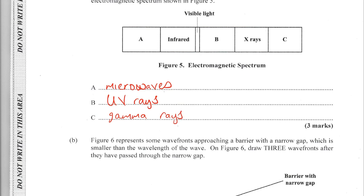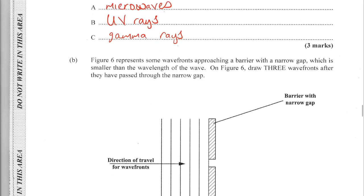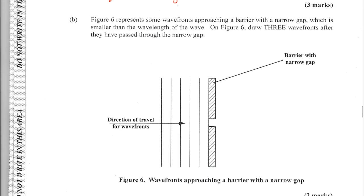Figure 6 represents waveforms approaching a barrier with a narrow gap, which is smaller than the wavelength of the wave. On figure 6, draw three waveforms after they have passed through the narrow gap — let's draw that to show what they look like as they pass through the barrier.